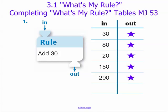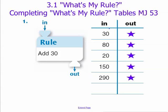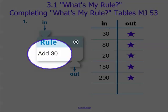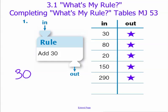To solve this first problem, we will take our first input which is 30 and apply the rule to it — add 30. So to show our thinking, we can do the problem here. Our input is 30, we apply our rule to that which is to add 30, so we know that our output should be 60.